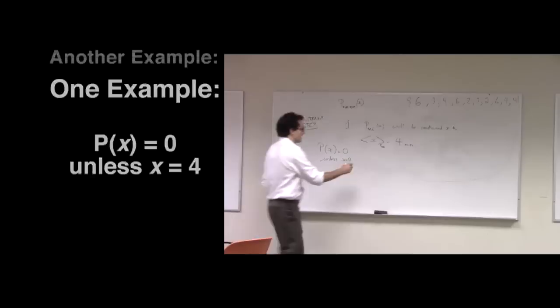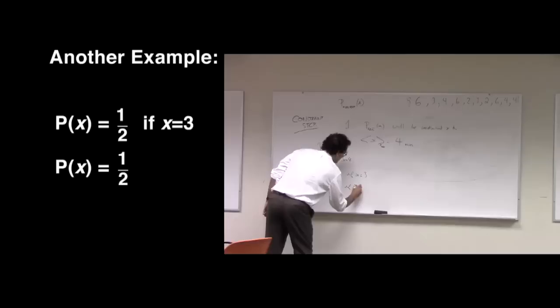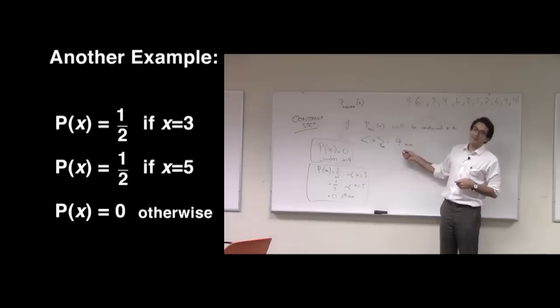Here's another example. P of X equals 1 half if X equals 3, 1 half if X equals 5, and 0 otherwise. These are all potential models of catching a cab in New York City that satisfy the constraint that their average is 4 minutes.